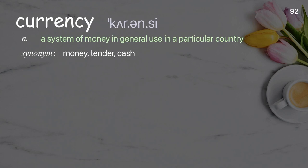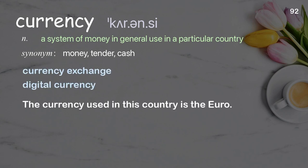Currency: a system of money in general use in a particular country. Examples: currency exchange, digital currency. The currency used in this country is the euro.